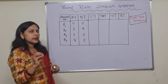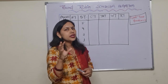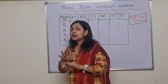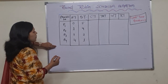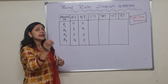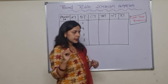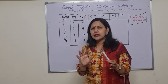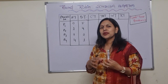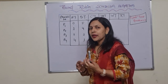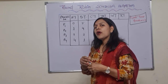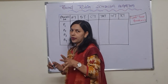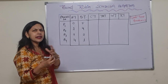One important thing: Round Robin scheduling cannot be non-preemptive - it is always the preemptive version. Another key point is the ready queue. Unlike other CPU scheduling algorithms where maintaining the ready queue is optional, in Round Robin you must properly maintain the ready queue, because if the sequence changes, your Gantt chart will be wrong.